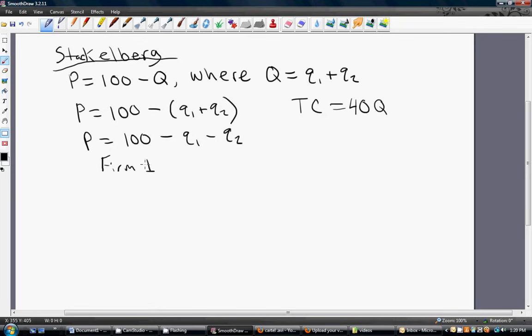So let's do this from firm 1's perspective. We'll assume that firm 1 is the first mover, the Stackelberg leader. This means that firm 1 sets its output, then firm 2 observes firm 1's output.